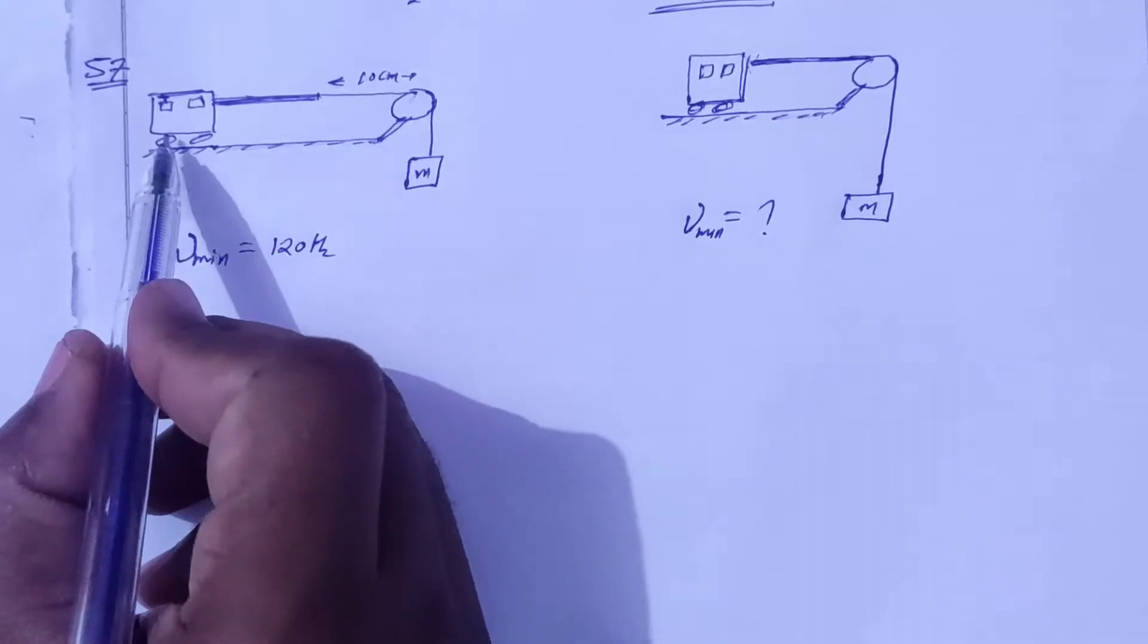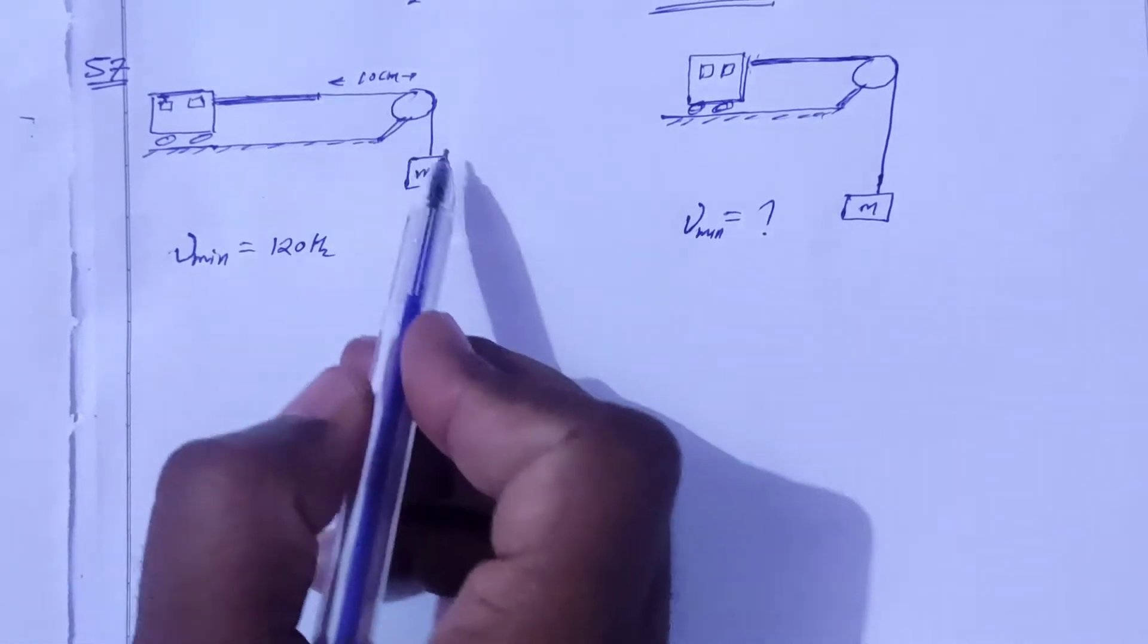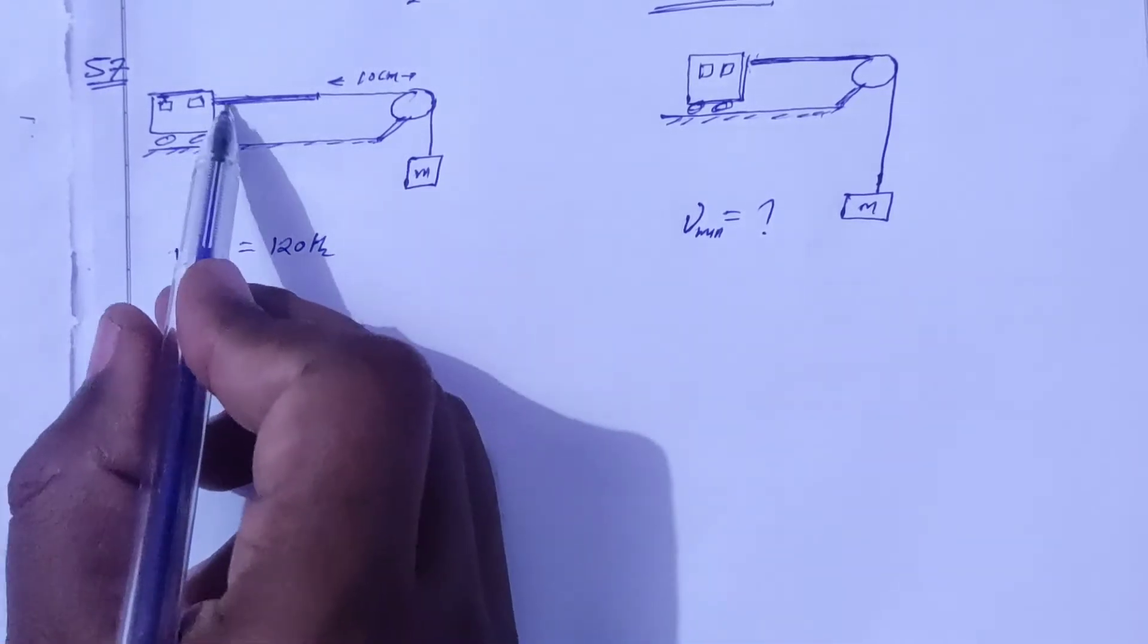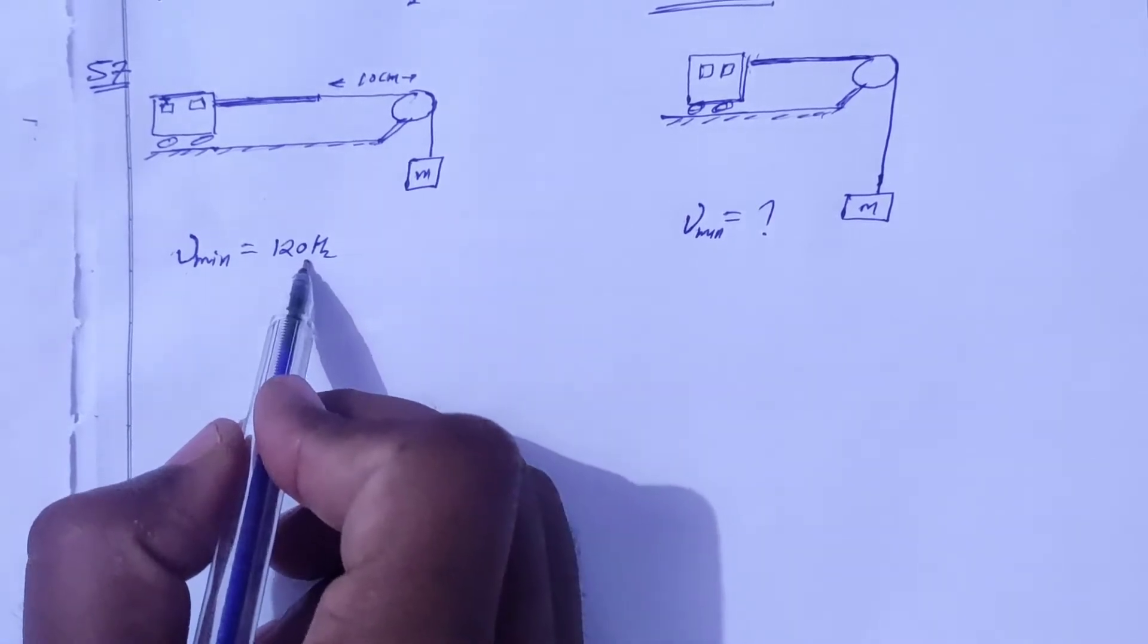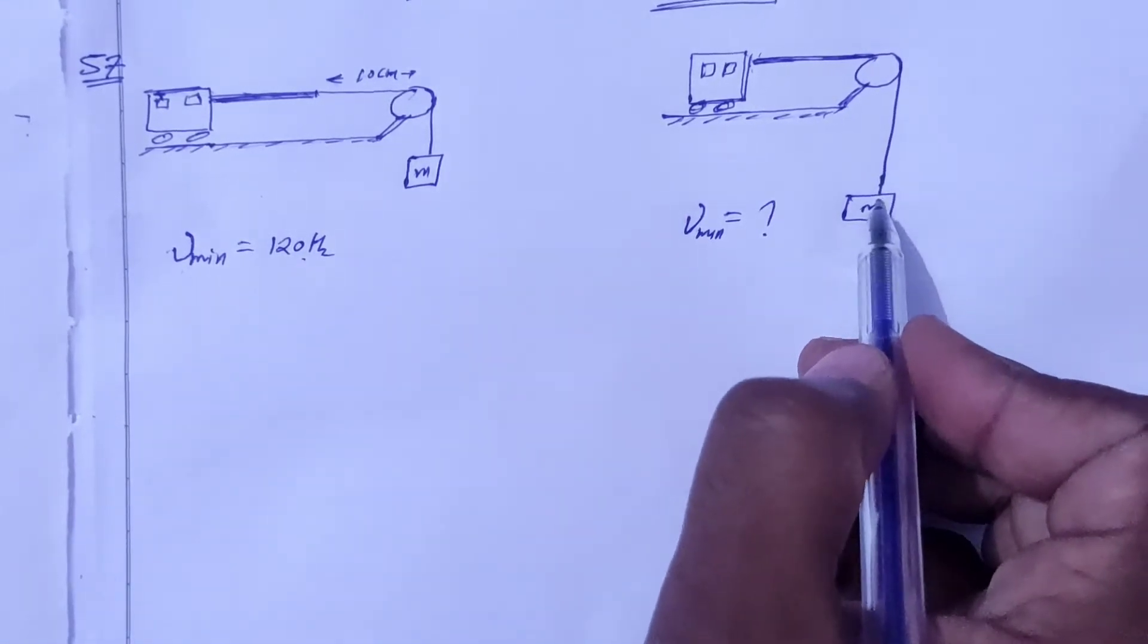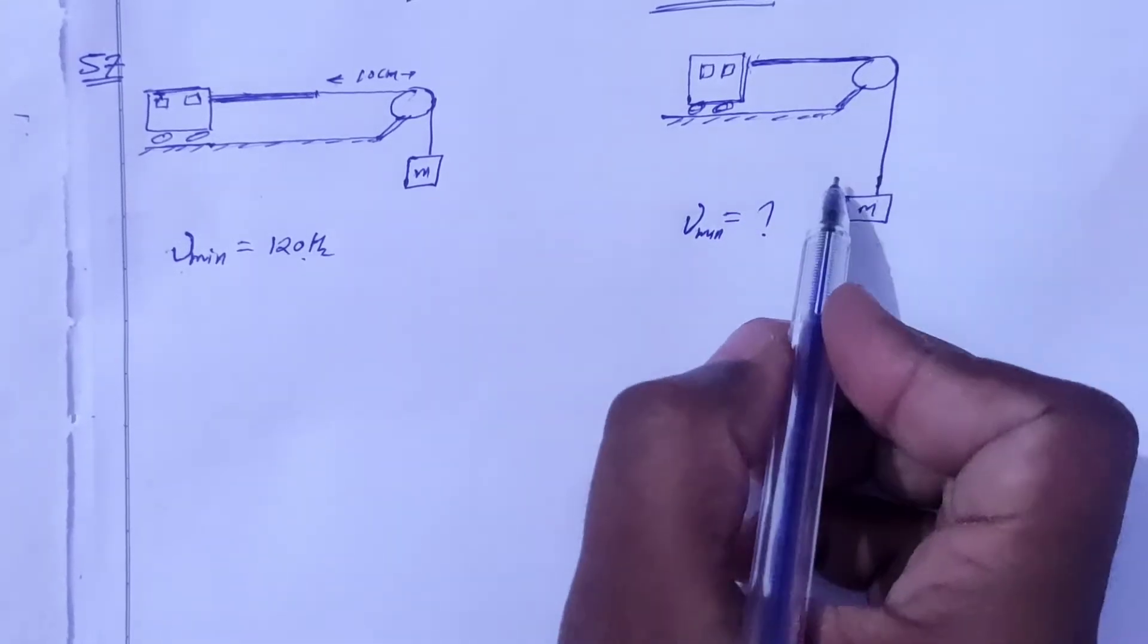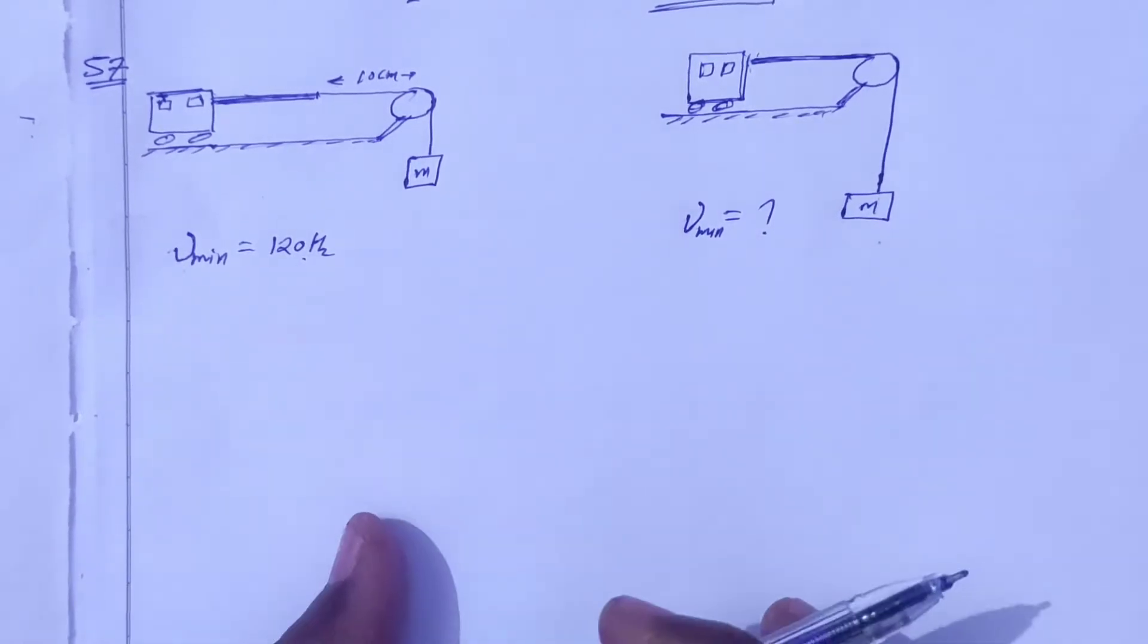In our first condition, this is a cart and here it is a heavy string and it is a light string. This is a mass which is used to produce tension. The frequency in this situation is 120 Hz, minimum frequency is 120 Hz. When the mass goes down, the cart will be used to connect the whole string with the pulley. In this situation, the minimum frequency will be found.